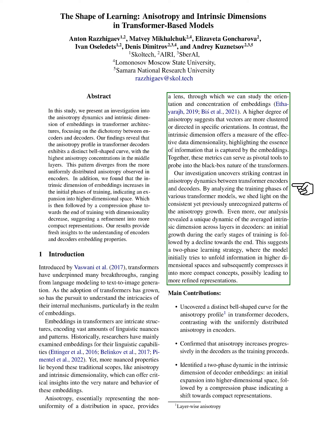Furthermore, we found a unique dynamic in the averaged intrinsic dimension across layers and decoders. There's an initial growth during the early stages of training, followed by a decline towards the end. This suggests a two-phase learning strategy, where the model first tries to unfold information in higher dimensional spaces and then compresses it into more compact concepts, possibly leading to more refined representations.